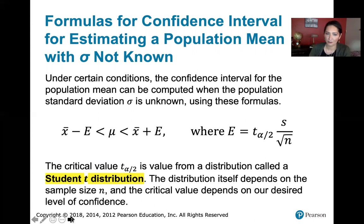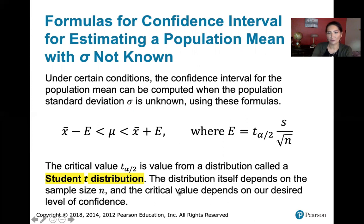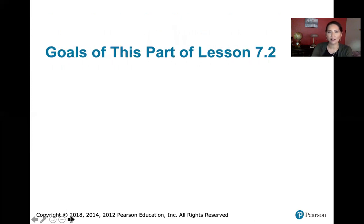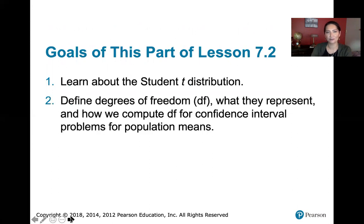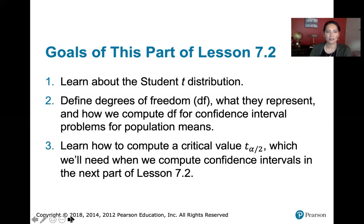The critical value t sub alpha over 2 is a value from the student t distribution. That distribution depends on the sample size n, and the critical value depends on our desired level of confidence — we need both to find t sub alpha over 2. The goals of this part of Lesson 7.2 are to learn about the student t distribution, define degrees of freedom, understand how we compute degrees of freedom for confidence interval problems, and learn how to compute those critical t values.